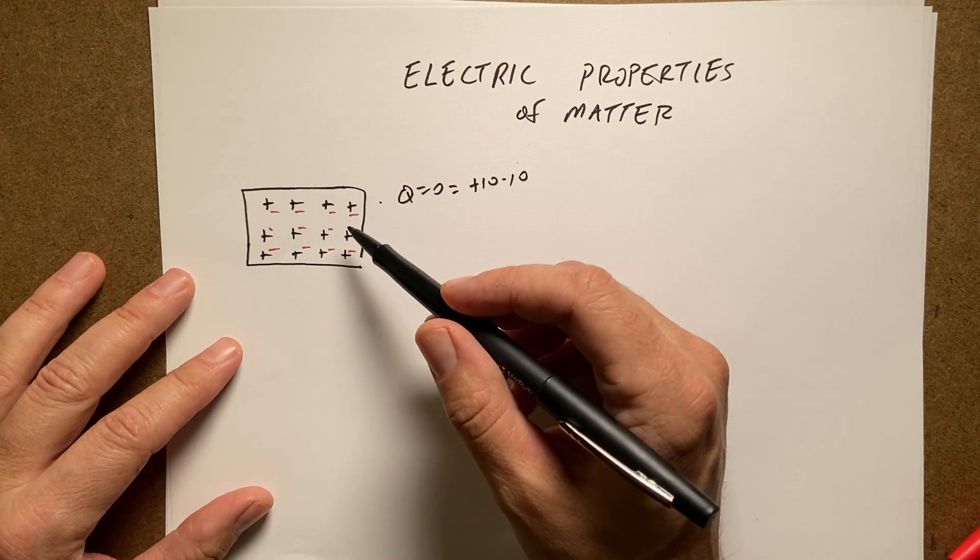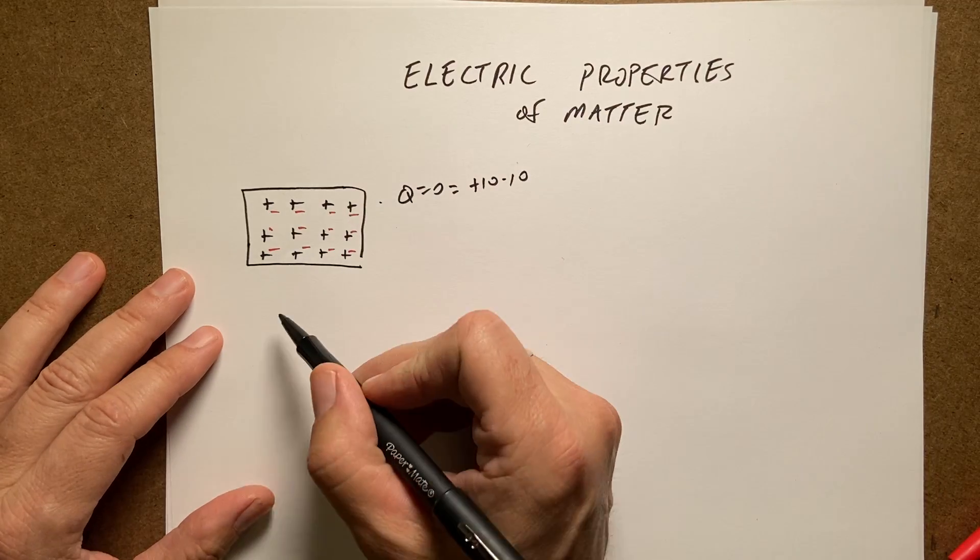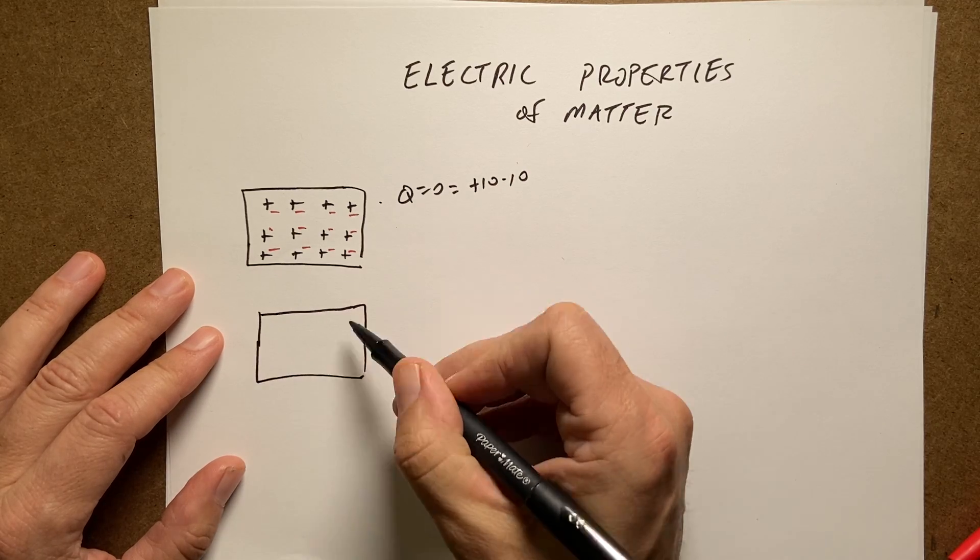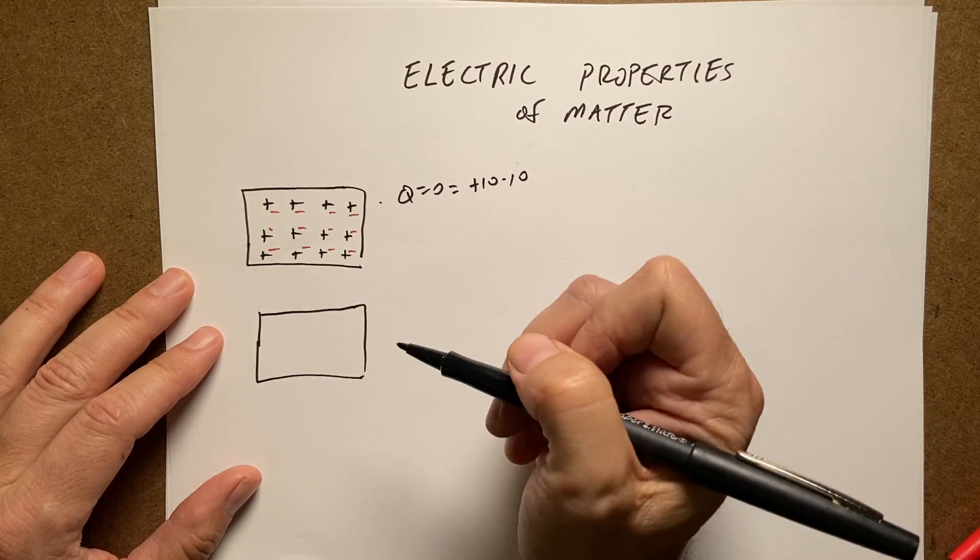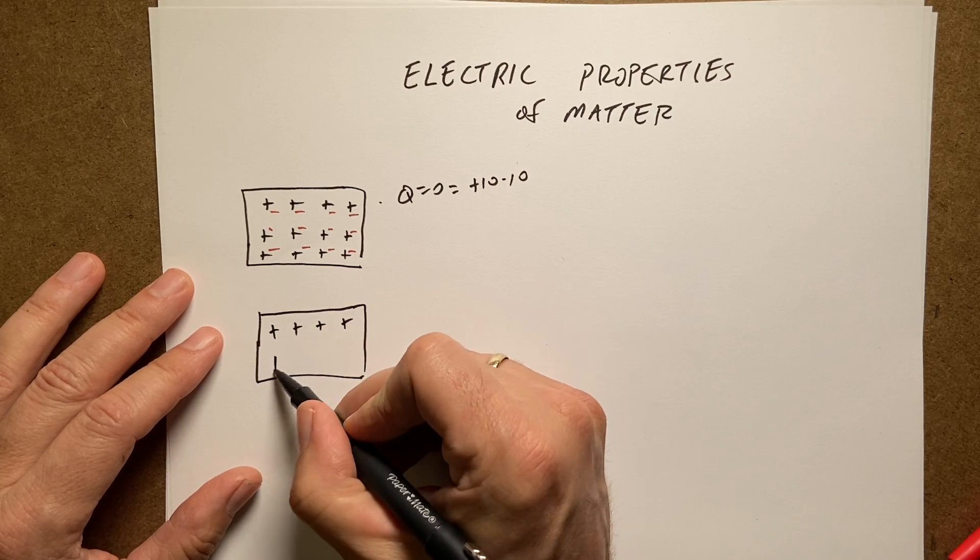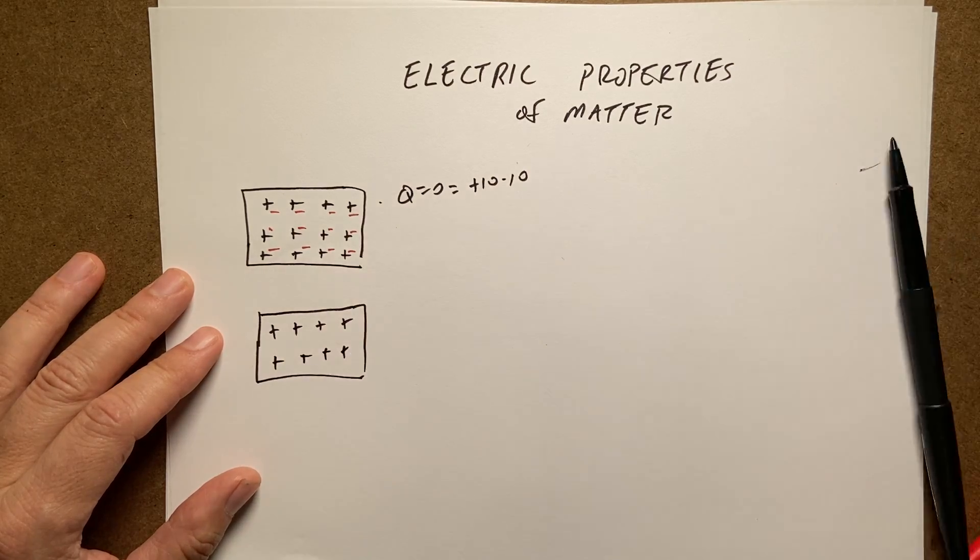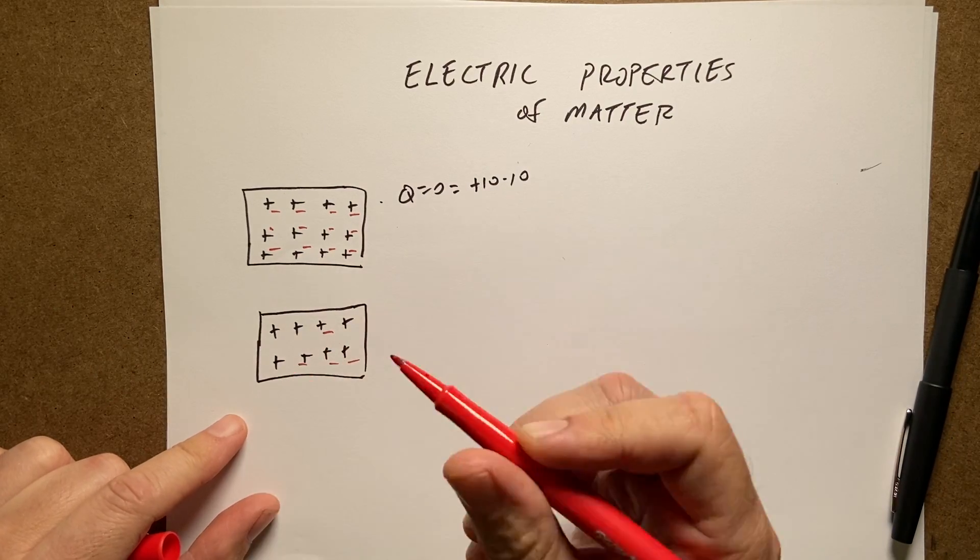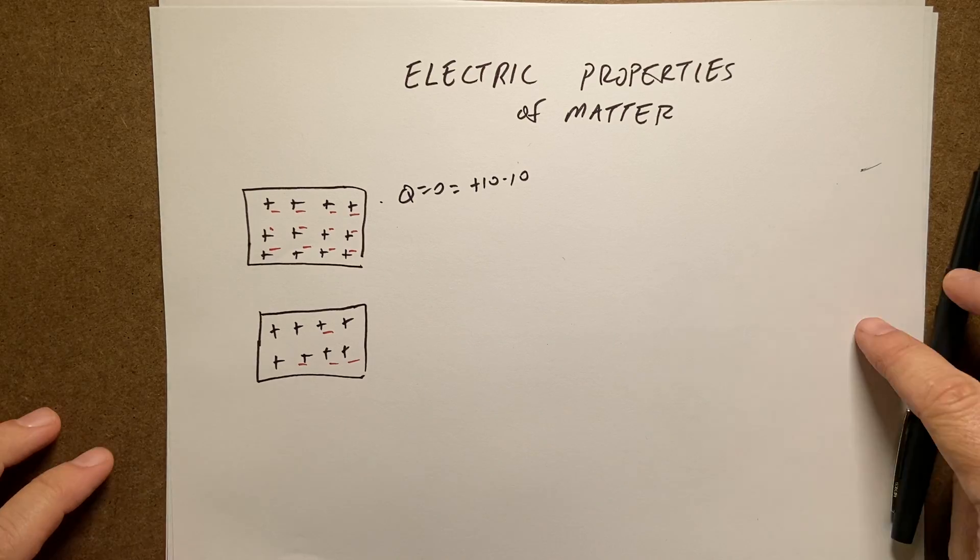How do you charge something? Normally, if we want to make something positive, it would be like this. And I drew the negatives as red. So if we want to make it positive, it'd just have more positives than negatives. And then here are the negatives. Let's say it only has like that. That's a positively charged thing.